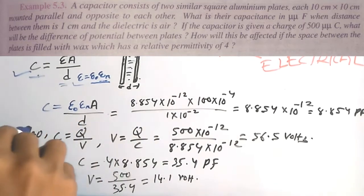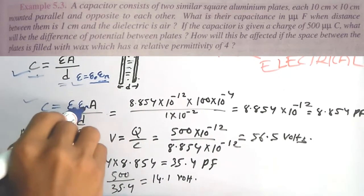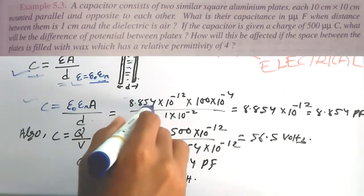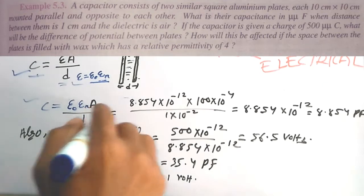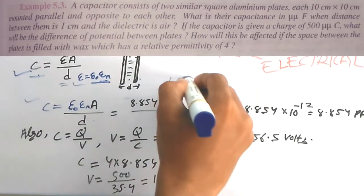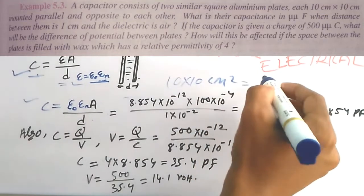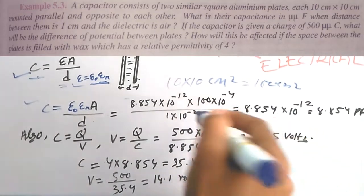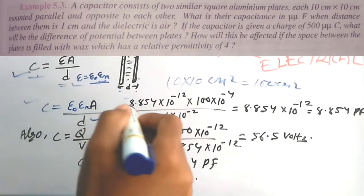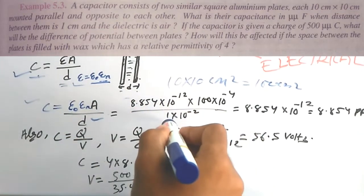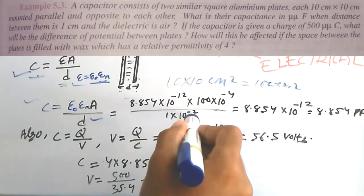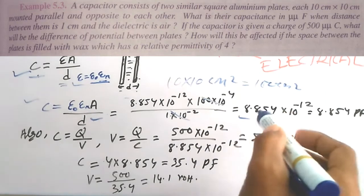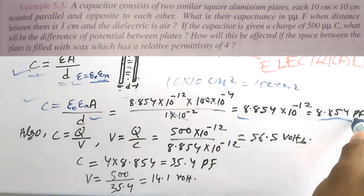As we know, C = epsilon-zero × epsilon-R × A / D. Epsilon-zero is the constant value 8.854 × 10⁻¹² F/m. The area is 10 × 10 cm² = 100 cm² = 100 × 10⁻⁴ m². The distance D is 1 cm = 1 × 10⁻² m. The 10⁻⁴ and 10⁻² cancel to give C = 8.854 × 10⁻¹² F, that is 8.854 pF.